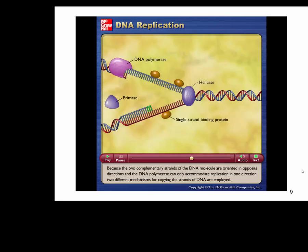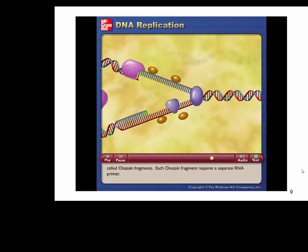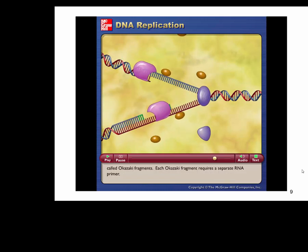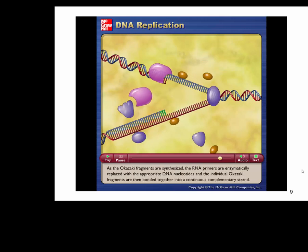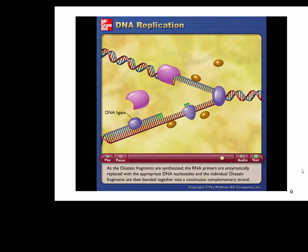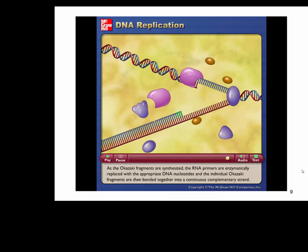Because the two complementary strands of the DNA molecule are oriented in opposite directions and DNA polymerase can only replicate in one direction, two different mechanisms are employed. One strand — the leading strand — is replicated continuously toward the unwinding portion of the original DNA molecule. The other strand — the lagging strand — is replicated discontinuously in the opposite direction, forming a series of short DNA segments called Okazaki fragments, each requiring a separate RNA primer. As the Okazaki fragments are synthesized, the RNA primers are enzymatically replaced with appropriate DNA nucleotides, and the individual Okazaki fragments are bonded together into a continuous complementary strand.